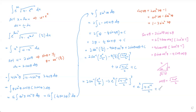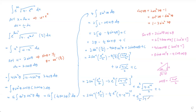Simplifying further: negative 2 over 8 is negative ¼, and the cube of √(4 − e^(2x)) over 2 gives (4 − e^(2x))^(3/2) over 8. The final answer is 2 arcsin(e^x/2) − ¼ e^x (4 − e^(2x))^(3/2) + ½ e^x √(4 − e^(2x)) + C.